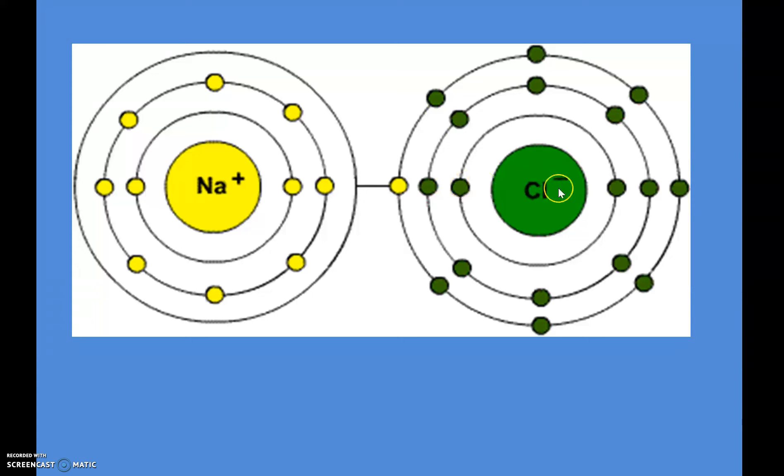Chlorine has the opposite problem. It's got two in its first shell, eight in its second shell, and it's got seven in its third shell. That third shell can hold eight, though, so it wants to take on one more electron by doing some kind of bond.